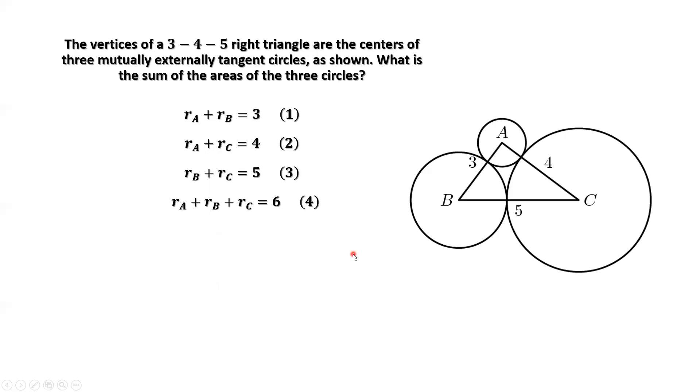Now we have four results. Equation 4 minus equation 3, we have RA equals 1. Equation 4 minus equation 2, we have RB equals 2. Equation 4 minus equation 1, we have RC equals 3.